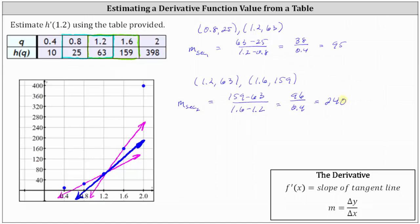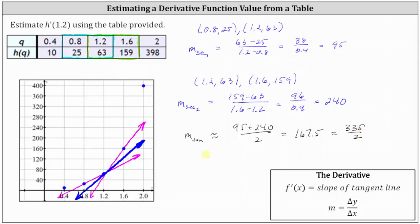So now we'll take the average of these two slopes to approximate the slope of the tangent line, which gives us our estimate for h prime of 1.2. The slope of the tangent line, m sub tangent, is approximately equal to the average of these two slopes: the quantity 95 plus 240 divided by 2, which equals 167.5, or 335 halves. Therefore, our estimate for h prime of 1.2 is approximately 167.5, or 335 halves.